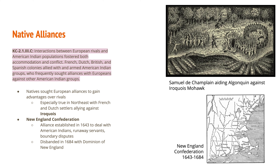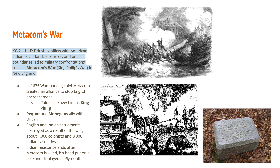Another form of conflict with Native tribes involved the New England Confederation — an alliance of all the New England colonies. They had communal powers to deal with American Indians, runaway servants, and boundary disputes. They lasted about 40 years, and during that time they defended the New England colonies from attacks that came as a result of Metacom's War.